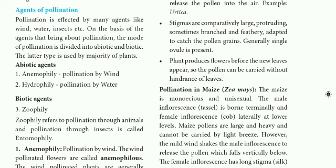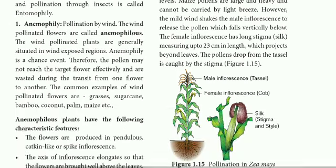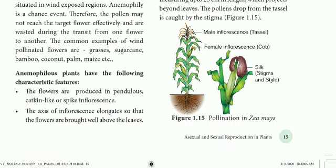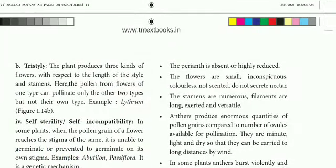These are the character features of animophilous plants. Examples include grasses, sugarcane, bamboo, coconut, palm, and maize. The key features include the inflorescence type, inflorescence axis position, small and inconspicuous flowers, reduced or absent perianth, numerous stamens with long filaments, and small dry pollen grains.